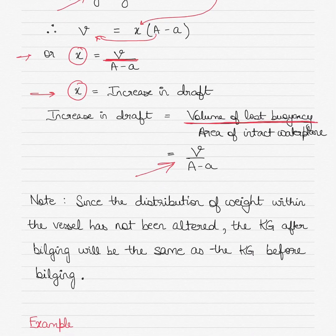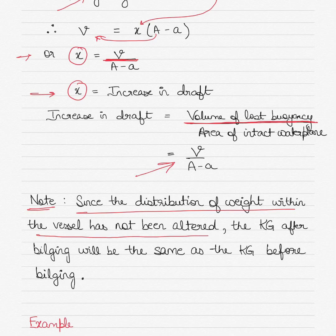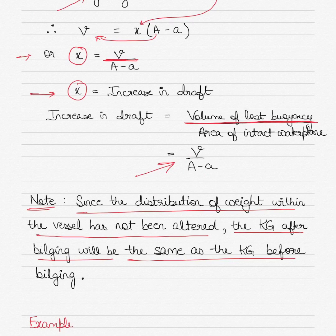Please note: since the distribution of weight within the vessel has not been altered, the KG — the distance of the center of gravity from the keel — after bilging will be the same as the KG before bilging. There is no shifting of weights.